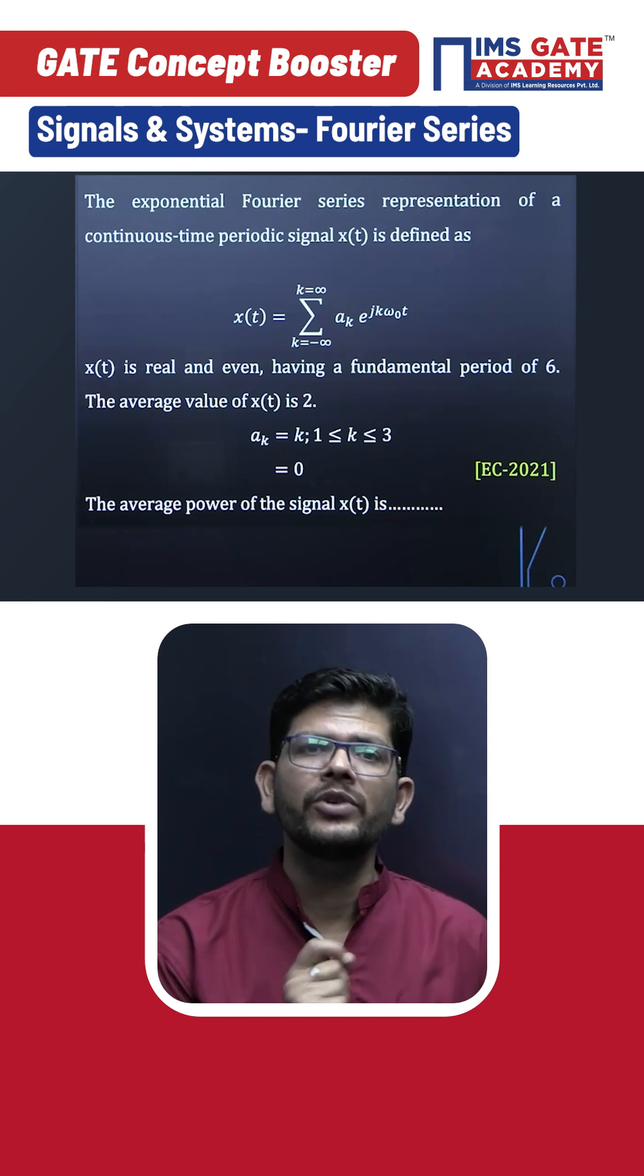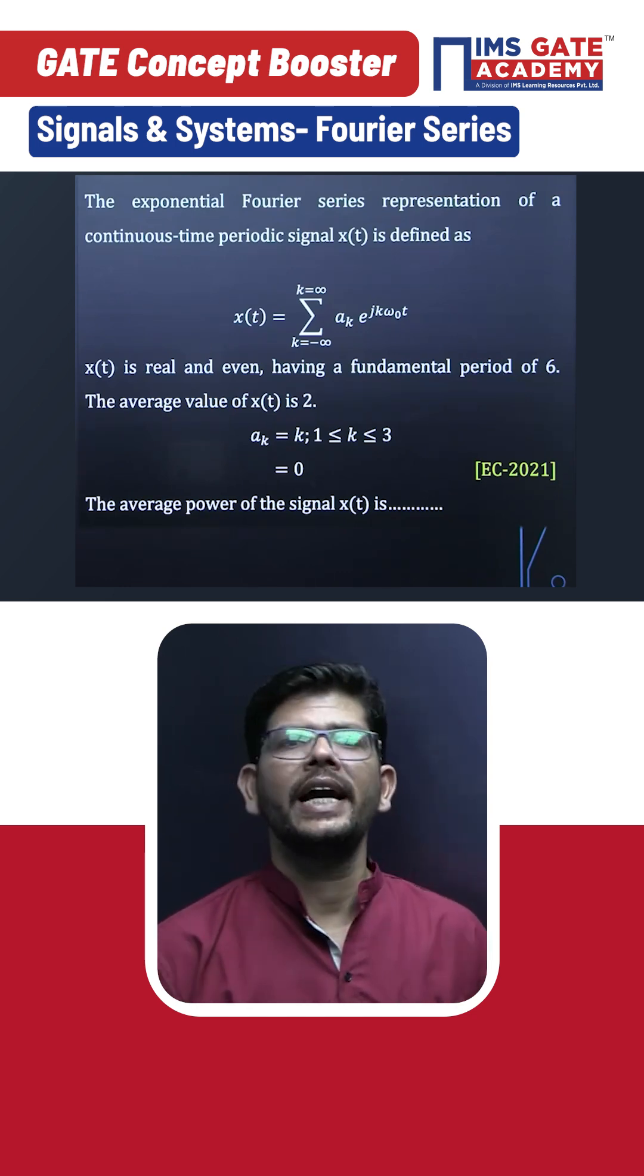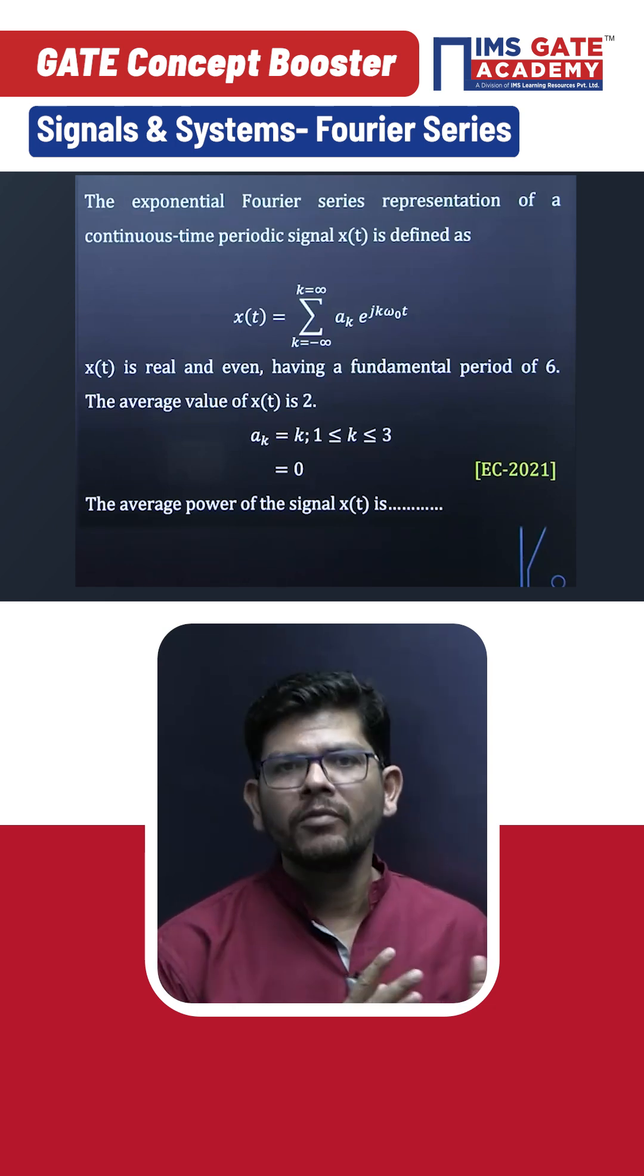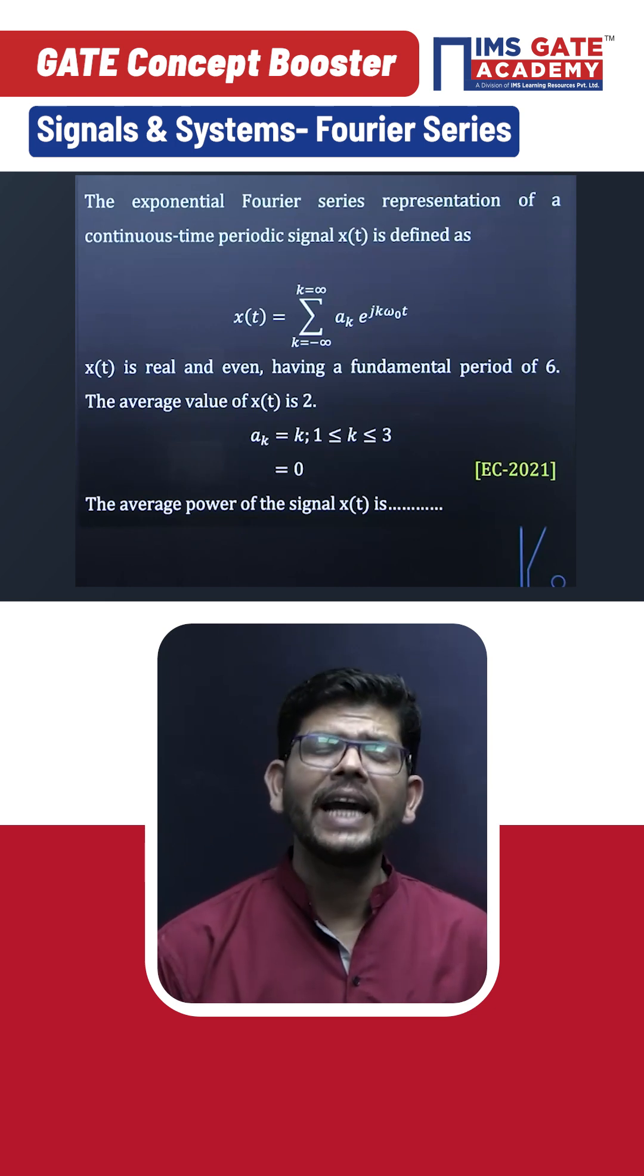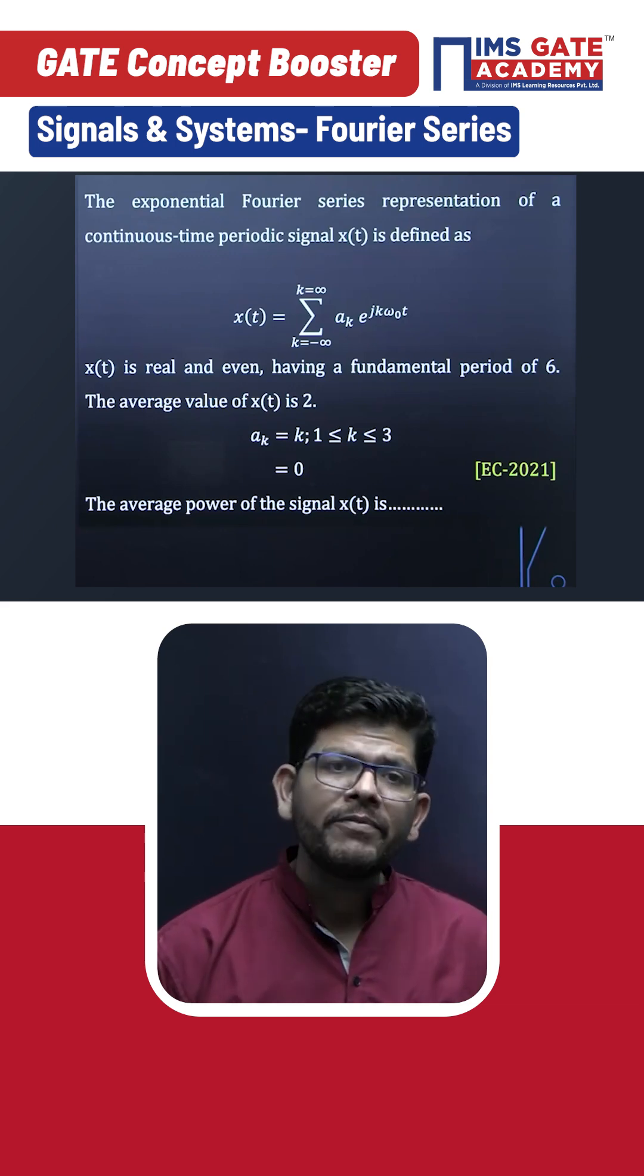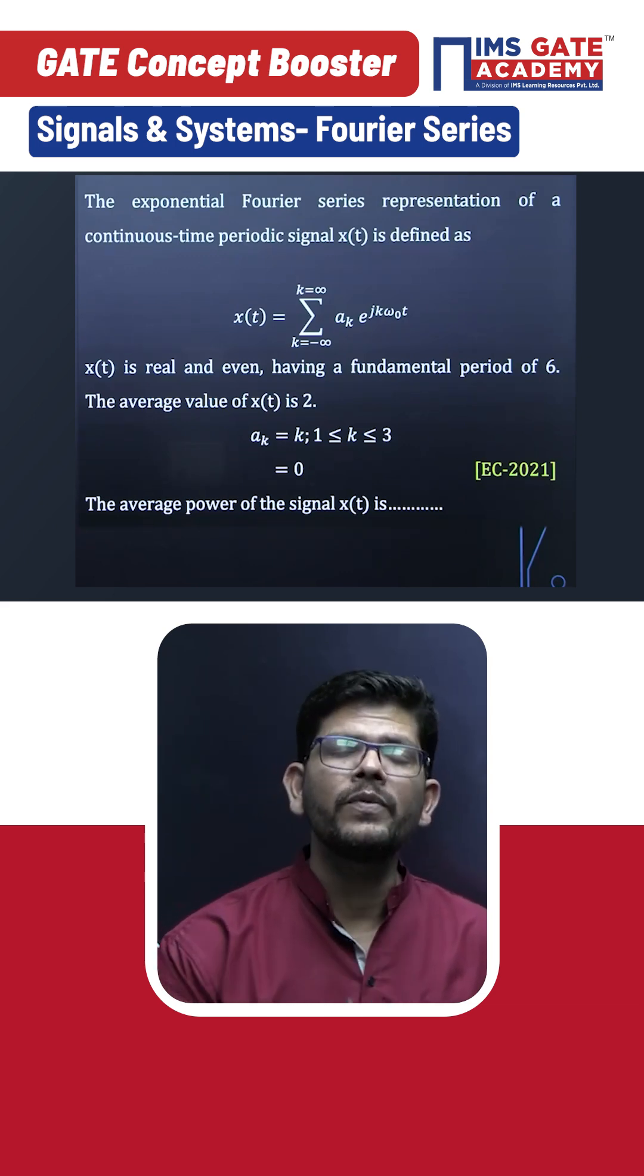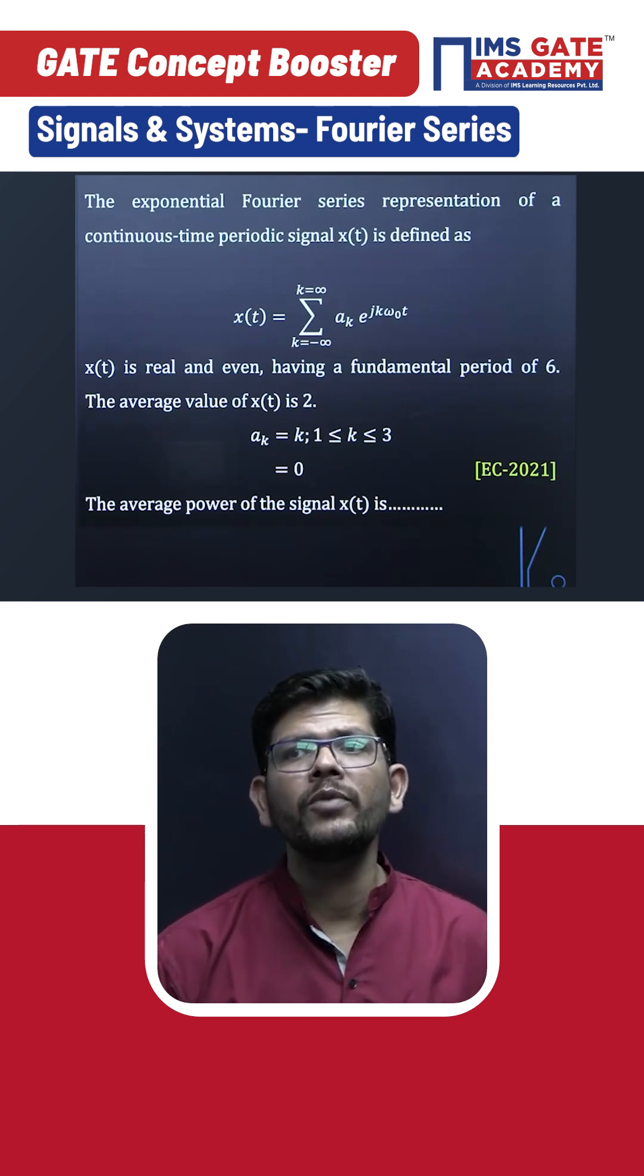Complex exponential Fourier series. What is given in this question is that a periodic signal x(t) has been represented by this complex exponential Fourier series form. What we are understanding from here is that x(t) has Fourier series coefficient a_k, and the signal x(t) is real and even and it has a fundamental time period of 6. Then the average value of this signal is also given, which is 2, and then they have given that coefficient a_k is k whenever k is from 1 to 3, and it is 0 for other values.